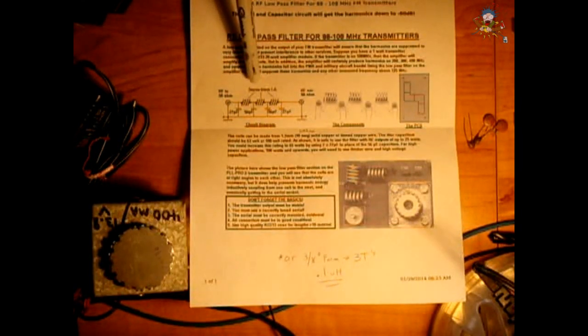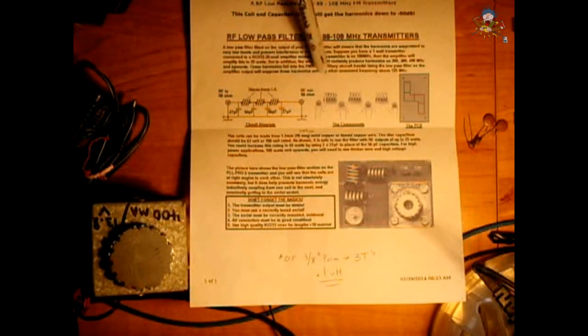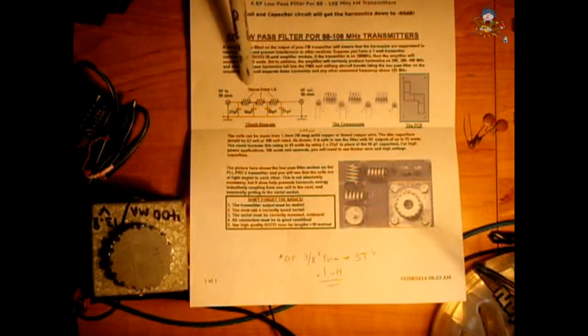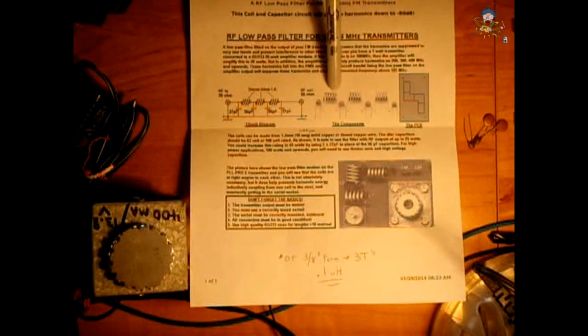Now in the video description area, I'm going to include a link. There's a calculator, which you can use to calculate whatever you want for your low pass filter. Now say you want to transmit up to 200. So you could design this to work up to 200 and block everything above 200. So that link will come in very handy. You can check that out in the video description area. Now what I did, it calls for these three coils.